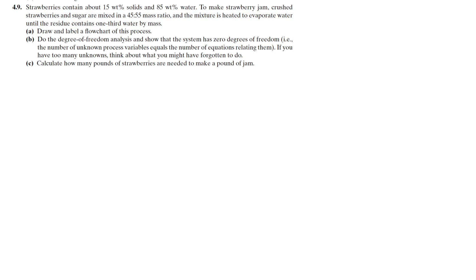Now the next problem: strawberries contain about 58% solids and 42% water to make strawberry jam. Crushed strawberries and sugar are mixed in a 45 to 55 mass ratio. The mixture is heated to evaporate water until the residue contains one-third water by mass. Draw and label the flowchart.